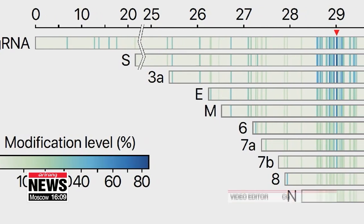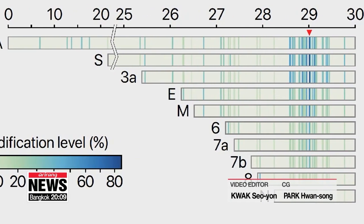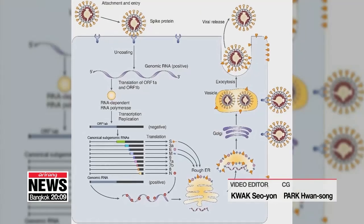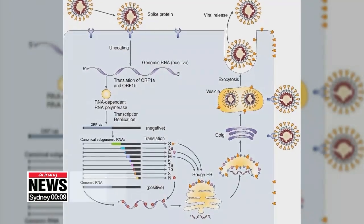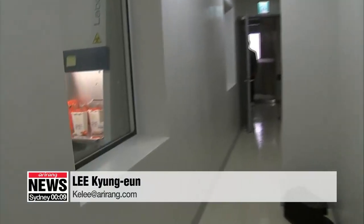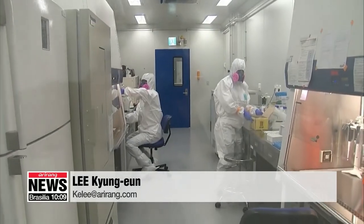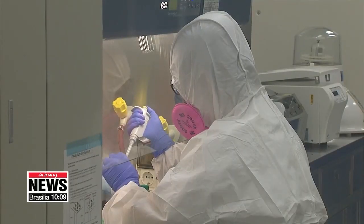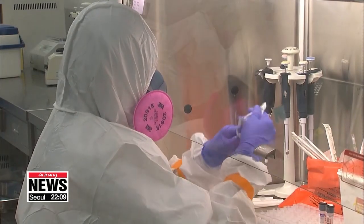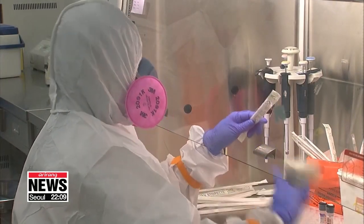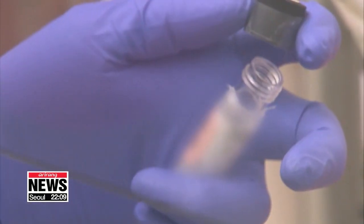The research found that at least 41 types of modification can occur. The scientists published their research in the journal Cell on Thursday. By using this map of the virus, researchers around the world will hopefully be able to create a more precise test and ultimately a more effective vaccine. Lee Kyung-eun, Arirang News.